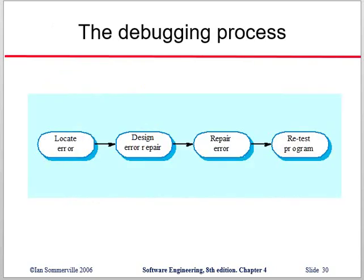The debugging process diagram is given here. First we locate the error, then design the repair, then repair the error, and lastly retest the program. That is how the debugging process works.